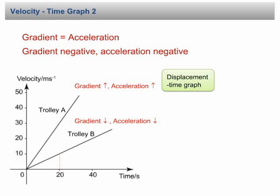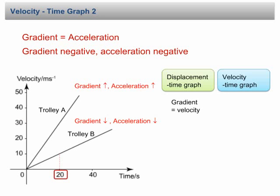Let's find the acceleration of trolley A. The change in velocity is 30 m/s and the change in time is 20 seconds. Therefore, the gradient is 30 over 20, equal to 1.5. The acceleration of trolley A is 1.5 m/s².